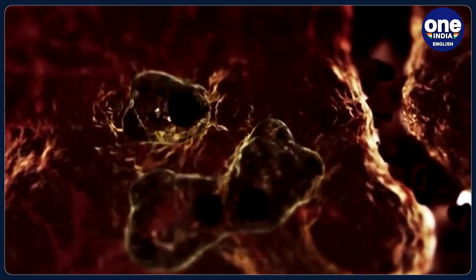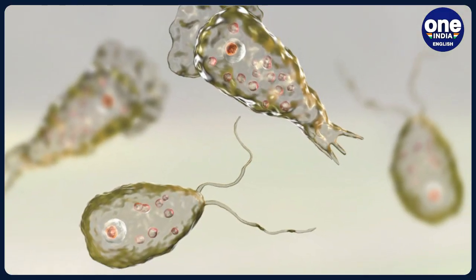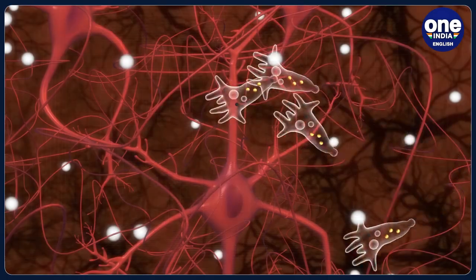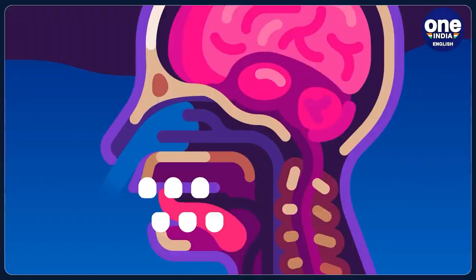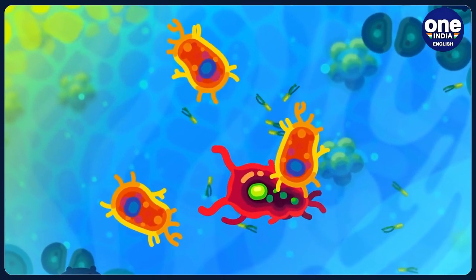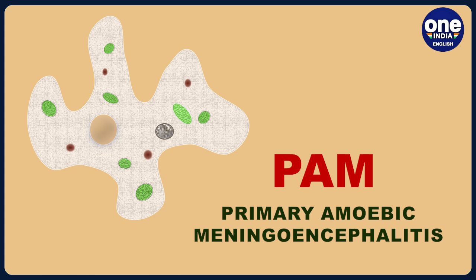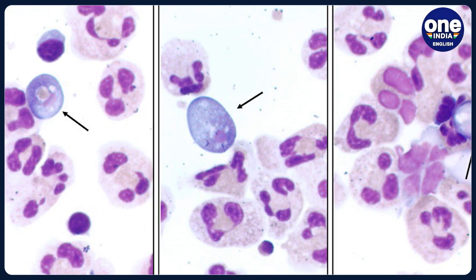So how exactly does it infect human beings? When water containing the amoeba enters the body through the nose, it infects people. This usually occurs when people go swimming, diving, or submerge their heads in fresh water such as lakes and rivers. The amoeba then travels up the nose to the brain, where it destroys brain tissue and causes PAM — primary amoebic meningoencephalitis — a very deadly infection. An important thing to note is that PAM is nearly always fatal.